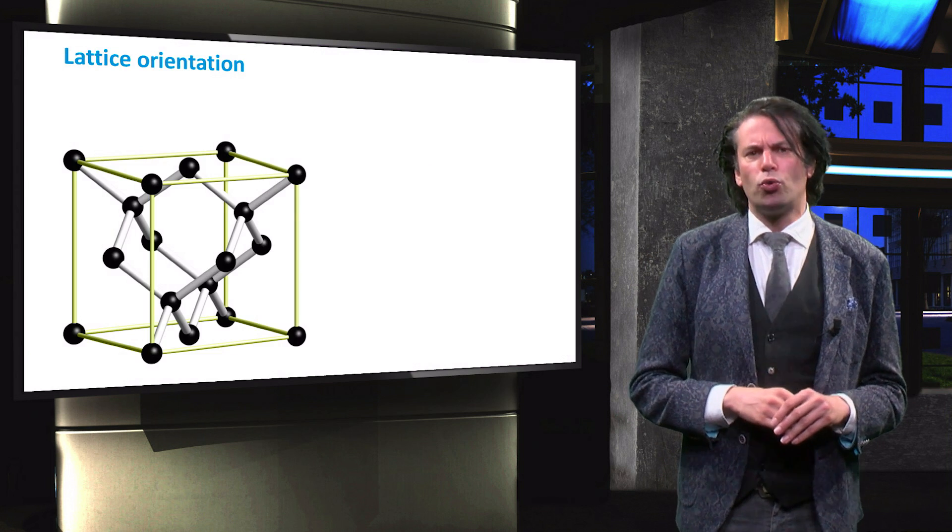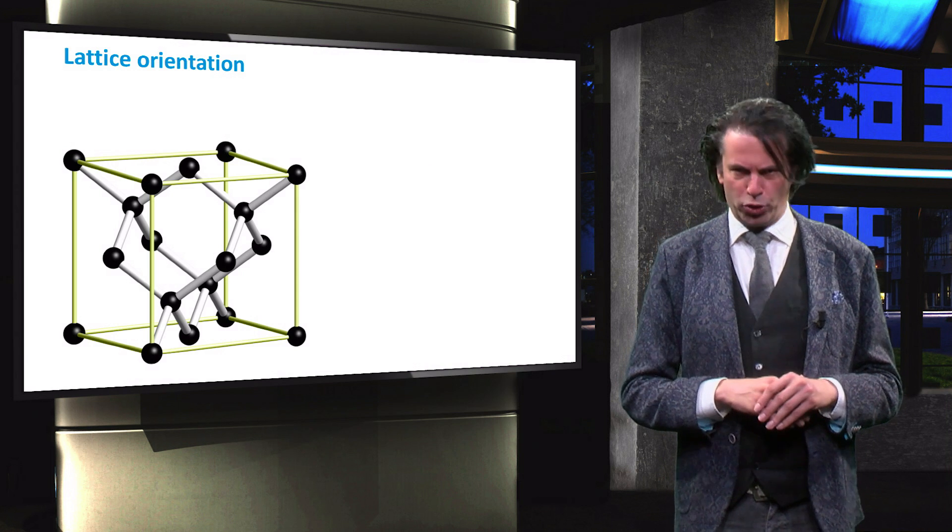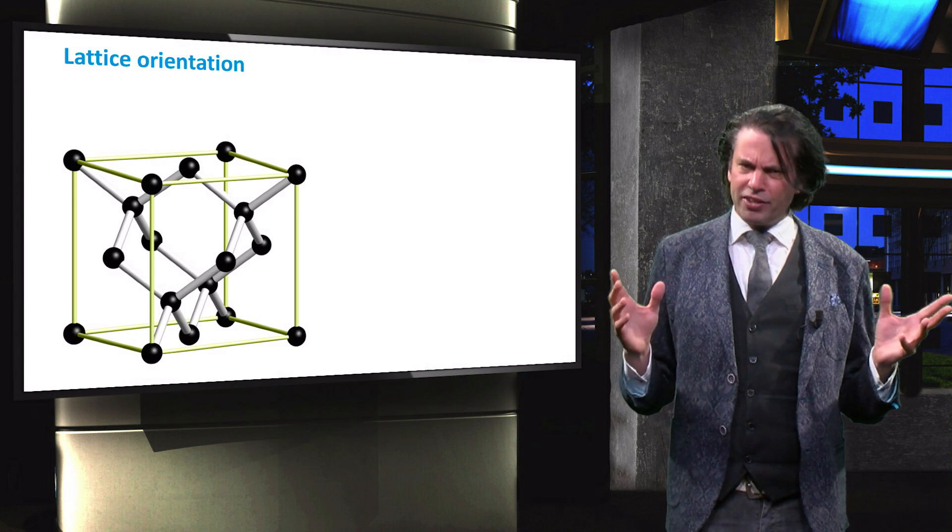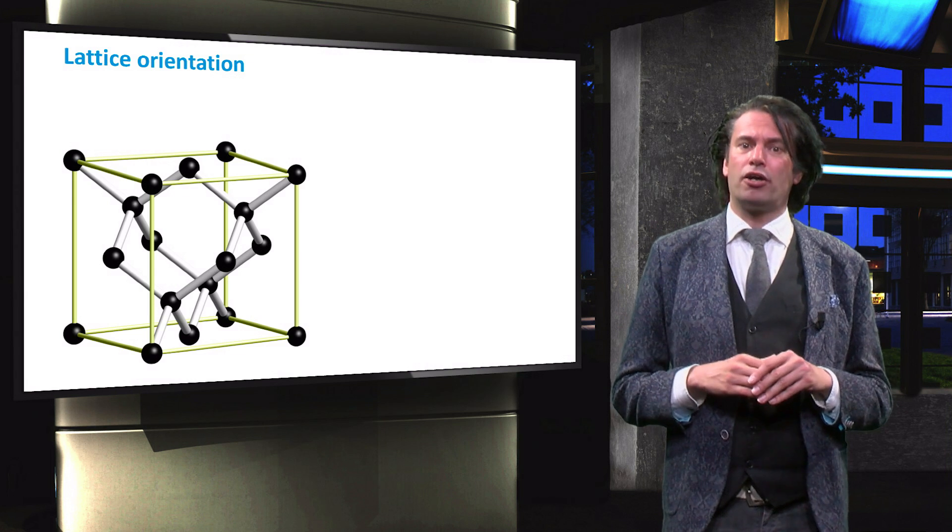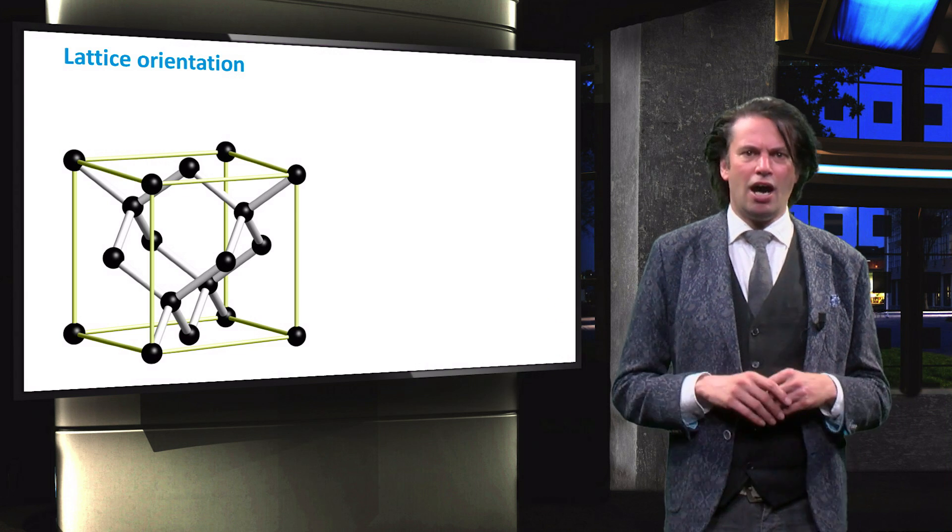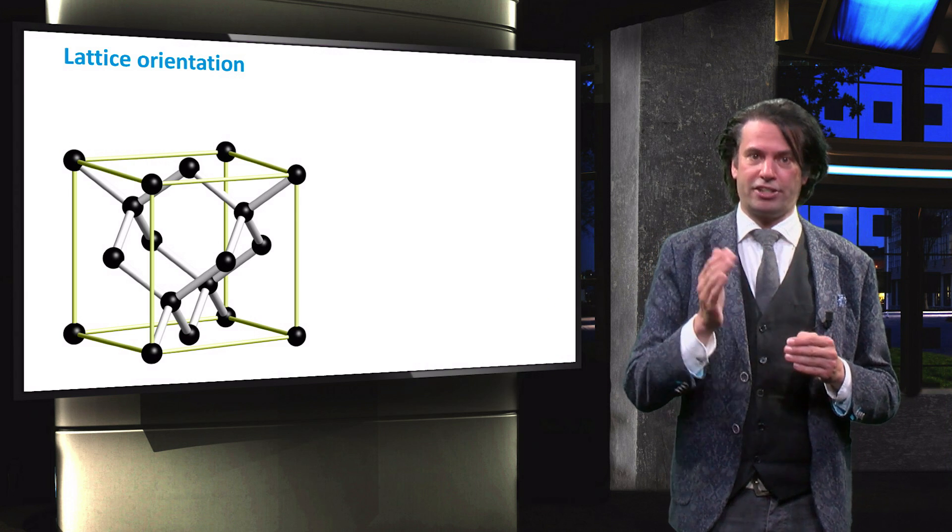Let's first begin with a small recap of the band dispersion diagram that was introduced earlier in this course. In a crystalline lattice, the atoms are arranged in a certain pattern that repeats itself. However, the pattern is not the same in every direction.